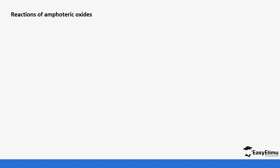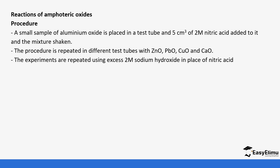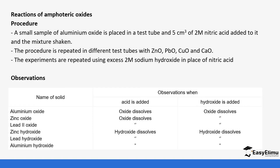To demonstrate amphoteric behavior, if you take aluminum oxide, zinc oxide, copper oxide, and calcium oxide and react them with acids and also with sodium hydroxide: aluminum oxide, when you react it with an acid such as nitric acid, it will dissolve. And when you react it with sodium hydroxide, it also dissolves. Zinc oxide dissolves with an acid and also with a base. Lead oxide dissolves with an acid and also with a base.